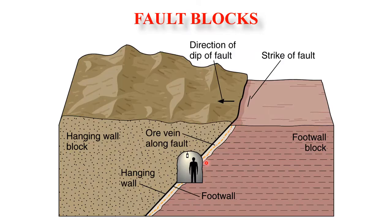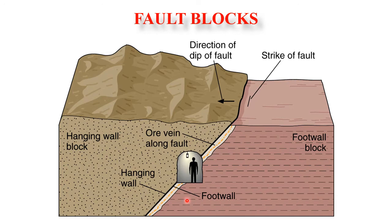A fault separates rock mass into two different blocks. The blocks immediately above or below a non-vertical fault are named the hanging wall and foot wall respectively. The block lying above the fault plane is known as the hanging wall, and the block lying below the fault plane is known as the foot wall.